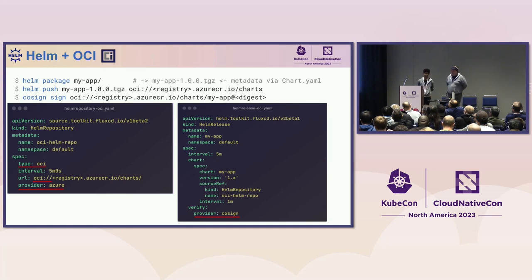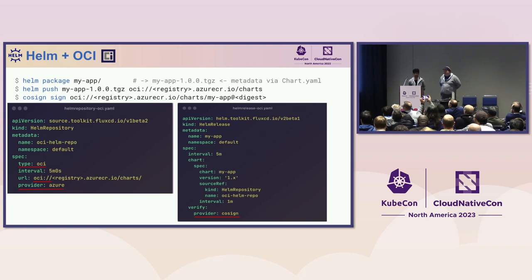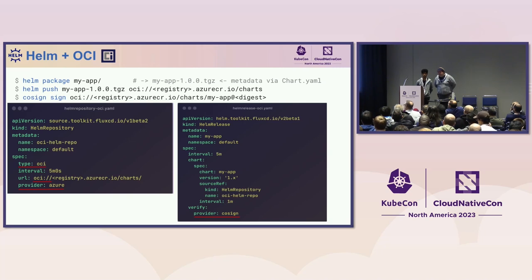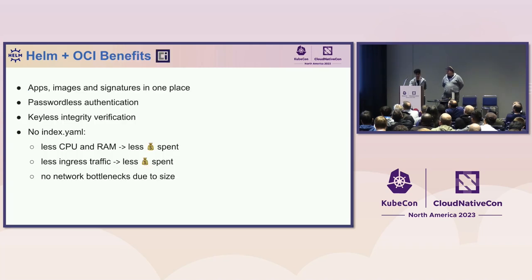What does this look like in practice? Helm package doesn't change at all — it generates a tarball with the chart YAML and metadata. Helm push changes a little: now you're pushing to an OCI URL, a registry. There's a third step if you're interested in provenance: cosign sign. The spec has some changes — we've added type OCI and the OCI prefix to the URL. We've added a provider field for authentication, and on the right-hand side, we've also added provider cosign for verification of the provenance.